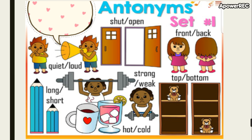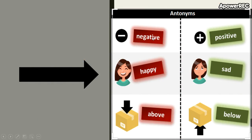أو كلمة وعكسها. Fourth grade: quiet, loud — long, short طويل قصير — hot, cold بارد ساخن — strong, weak قوي ضعيف. Big, small — shut, open — front, back — top, bottom — negative, positive سلبي إيجابي — happy, sad سعيد حزين — above and below.